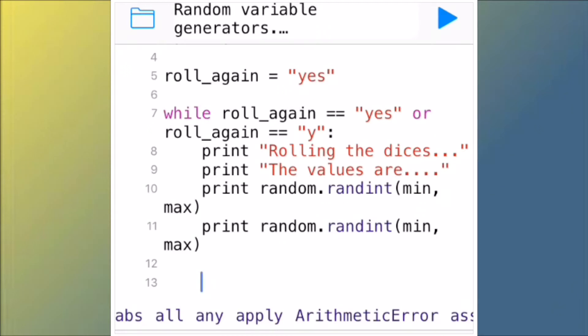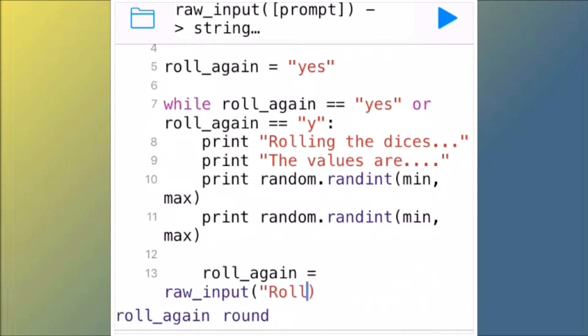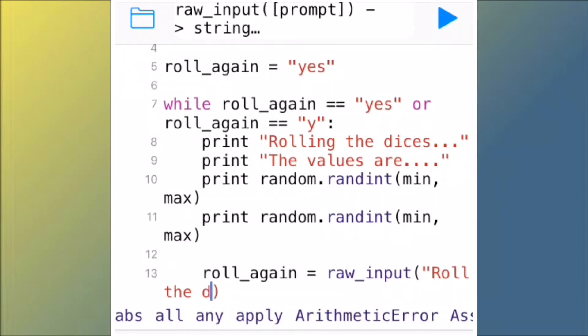We've got one last line to do. Do two returns onto the thirteenth line, which is the last line. Don't take anything away, just put roll underscore again space equals space input open bracket, two quotation marks, capital R, roll space the space dices space again question mark, close quotation marks, close bracket.